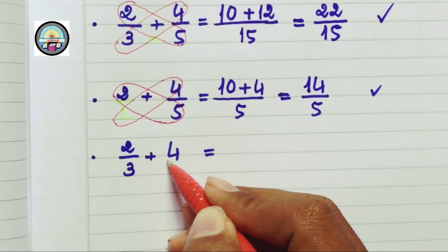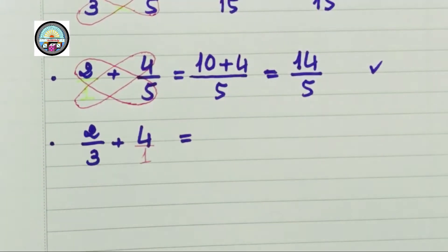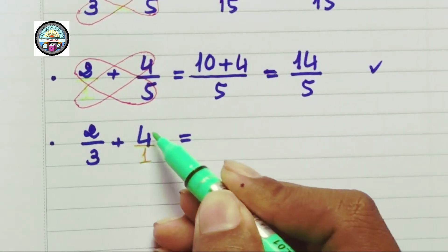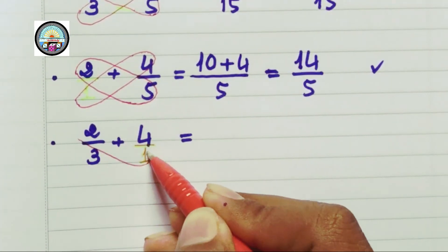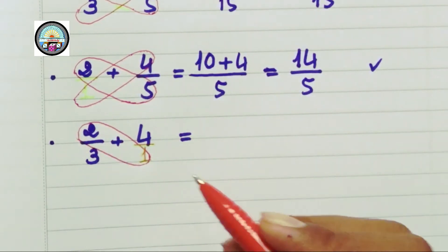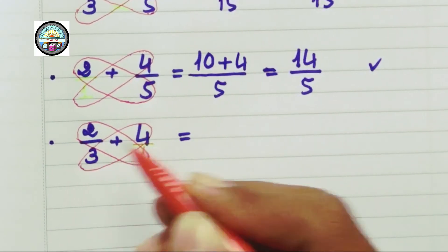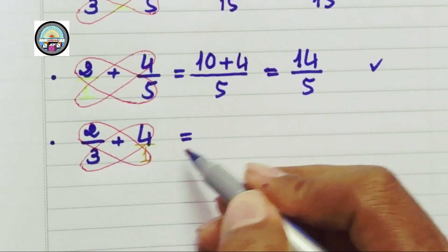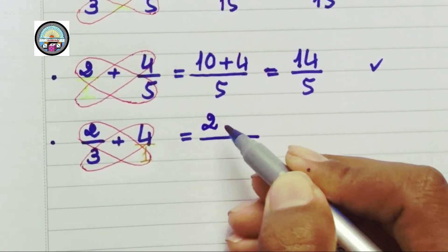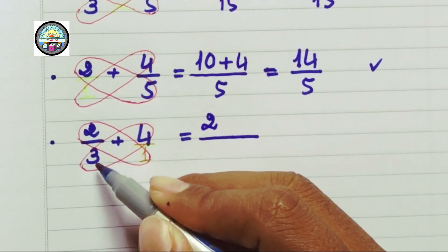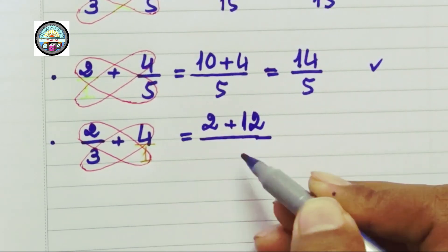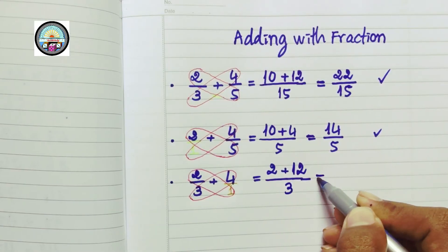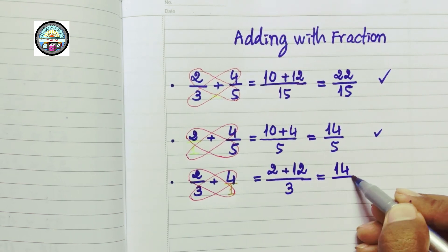For this one, you can write 4 over 1. And then, 2 times 1 equals 2, 3 times 4 equals 12, 3 times 1 equals 3. Equal to 14 over 3.